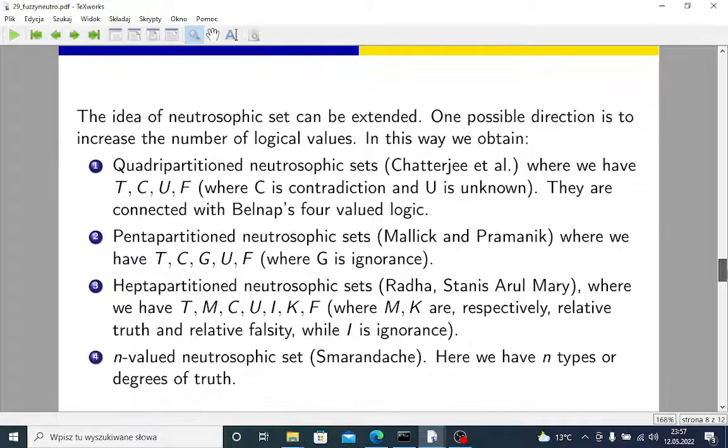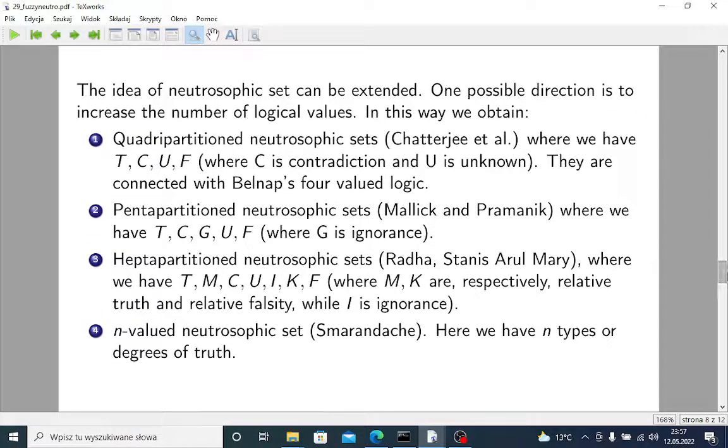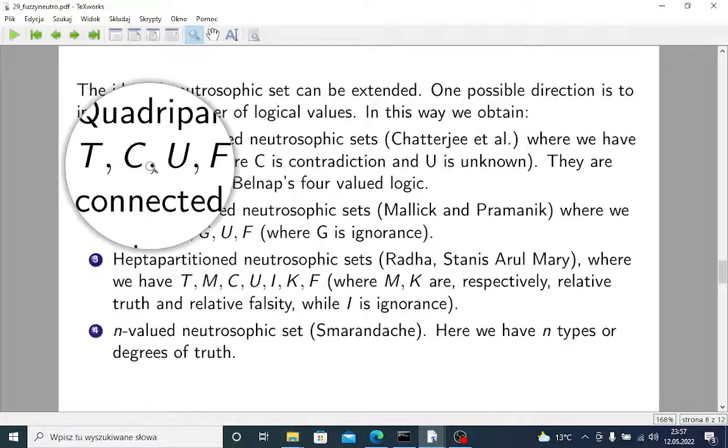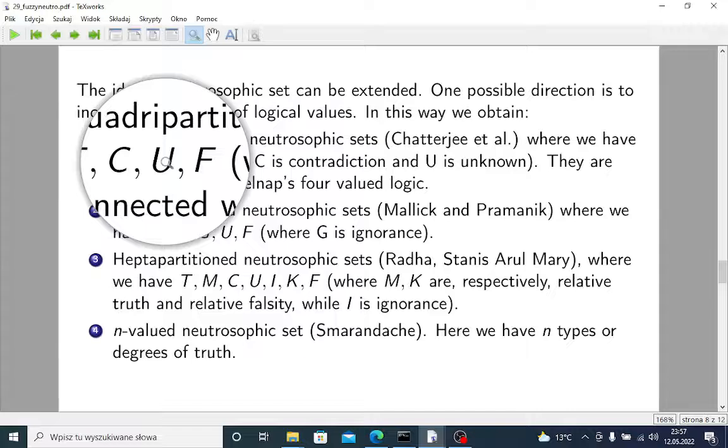The idea of neutrosophic set, which is already very general, it can be extended. And one possible direction is to increase the number of logical values. And in this way, we may obtain quadripartitionate neutrosophic sets, where indeterminacy is splitted into contradiction and unknownness.